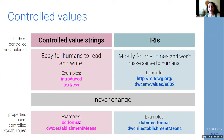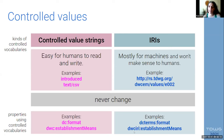For example, the term DC format expects a controlled value string, while DC terms format expects an IRI. The same happens with Darwin Core term 'establishment means' — DWC establishment means expects a controlled value string, while the Darwin Core IRI establishment means expects an IRI. So if we're working with the string term, we put values like 'introduced'; but if using the IRI version, we look for the particular IRI that signifies 'introduced.'